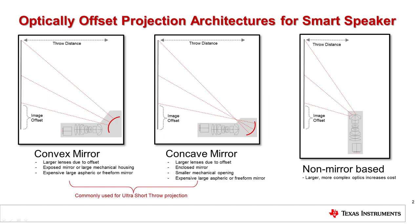There are three common optical design architectures for a smart speaker projector application. The first uses a convex mirror, which can be either aspheric or freeform. Due to the diverging light rays from the rest of the optics of the projection lens, the convex mirror is typically large.